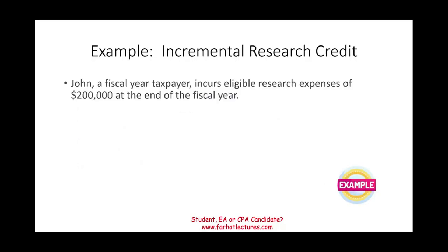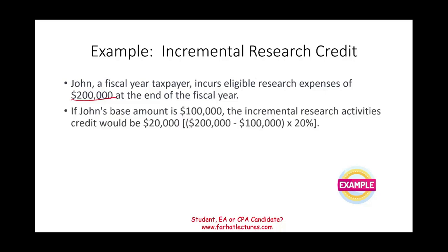Here's a quick example: John incurred eligible research expenses of $200,000. The base amount is assumed to be $100,000. The amount above the base amount is $100,000, multiplied by 20%, giving a research credit of $20,000.